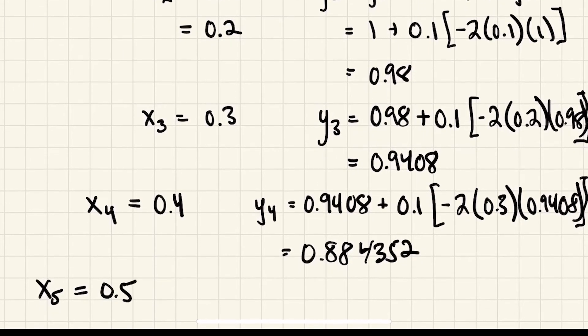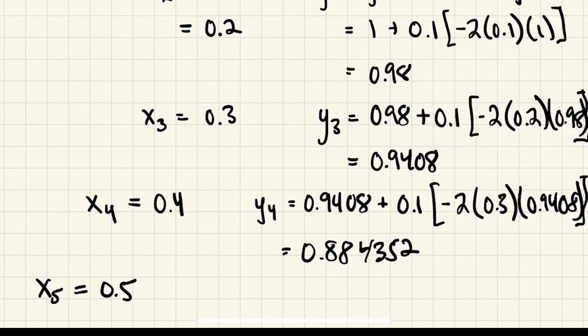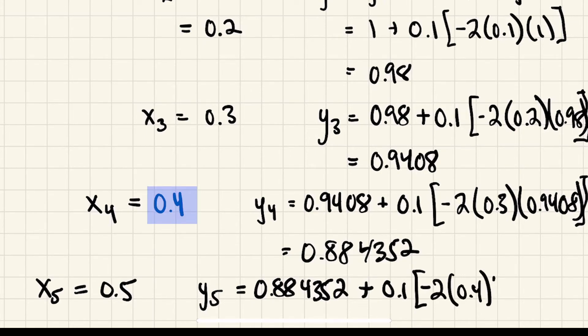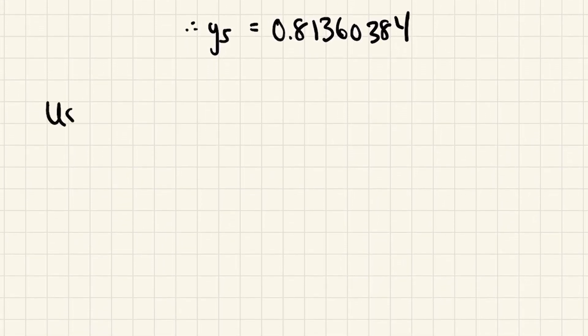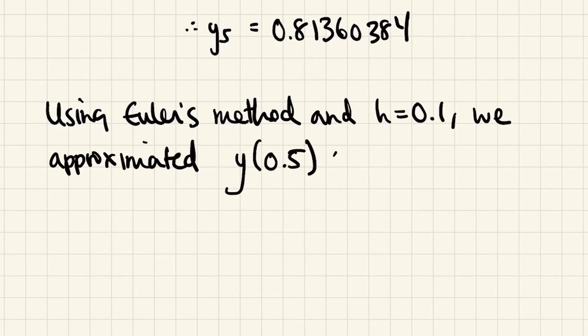And x₅ is 0.5. Now we know that that's actually the x value we were seeking, which means that correspondingly y₅ is going to be the actual y value we seek, or the close approximation generated by Euler's method to the true y value. So we're going to say that's the previous y value plus 0.1 times this stuff. And I calculated a y₅ of 0.81360384. So the answer to the original question, which was to approximate y(0.5), that answer is 0.81360384.